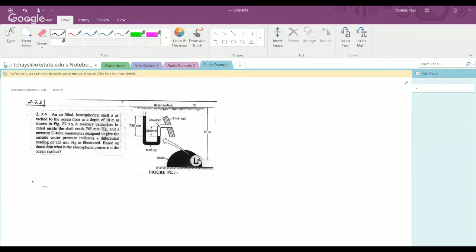A mercury barometer located inside the shell reads 765 millimeters of mercury. Now keep in mind this is a barometer, so that's the device that in its most basic form just has a pail of liquid mercury, an inverted test tube put into it.